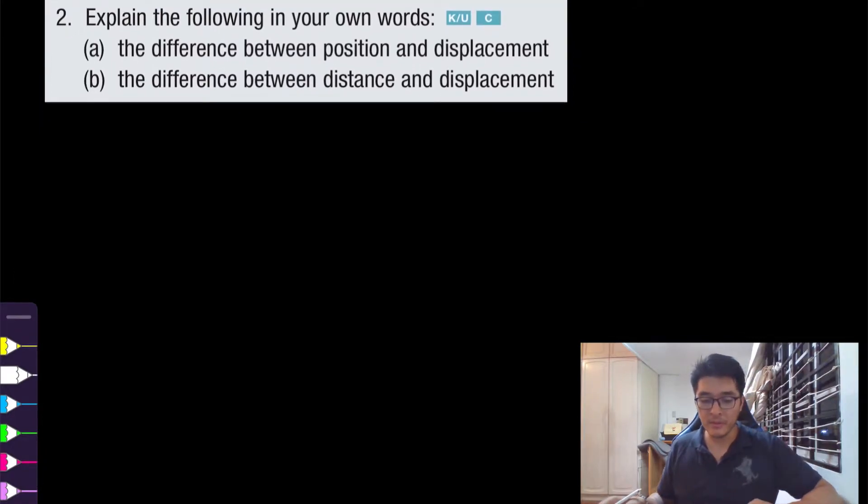Now for question number two, it asks explain the following in your own words: the difference between position and displacement. For this, if you watch my previous videos, I always reference that we have a tree and we have our famous cheetah. Now if we want to describe the position of the cheetah, we always choose the origin—stationary objects such as a tree. To describe the position requires us to choose an origin and to locate the distance from that origin. So position has to do with a distance from a fixed origin.